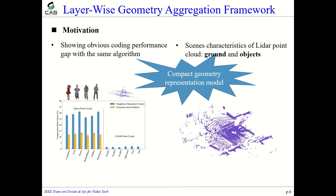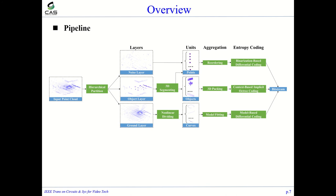The difference usually increases the difficulty of modeling point distribution. Hence, the model for constructing dependencies between related points affecting compression performance is designed as a region-based geometry representation model. The framework adaptively partitions an input point cloud into three layers with different distributed characteristics, including a ground layer, an object layer, and a noise layer. Tailored processing and corresponding coding algorithms are designed for compressing each layer.